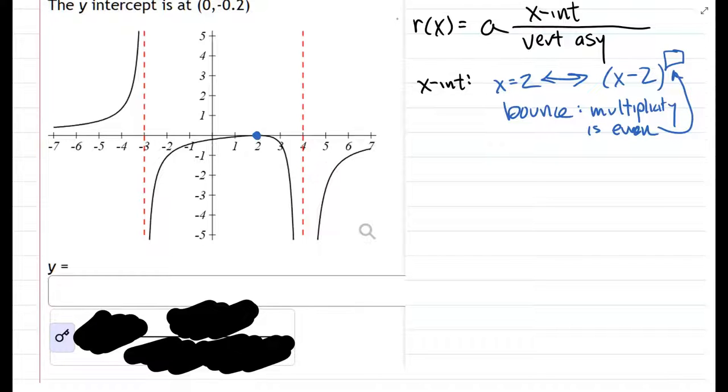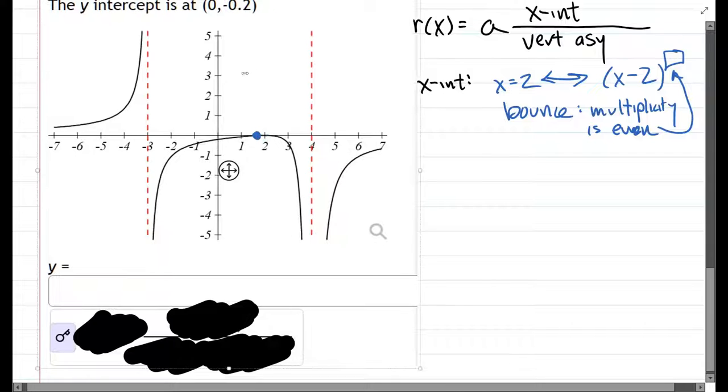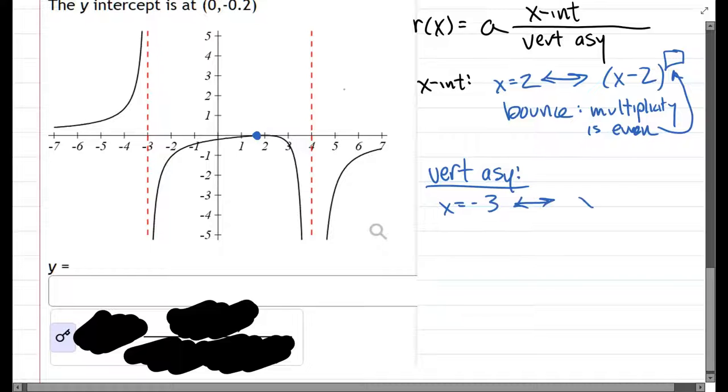Vertical asymptotes, there's two. The first is x equals negative three, which corresponds to the factor x plus three. This vertical asymptote crosses because it leaves going up and comes back on the other side, so that's going to be a cross.